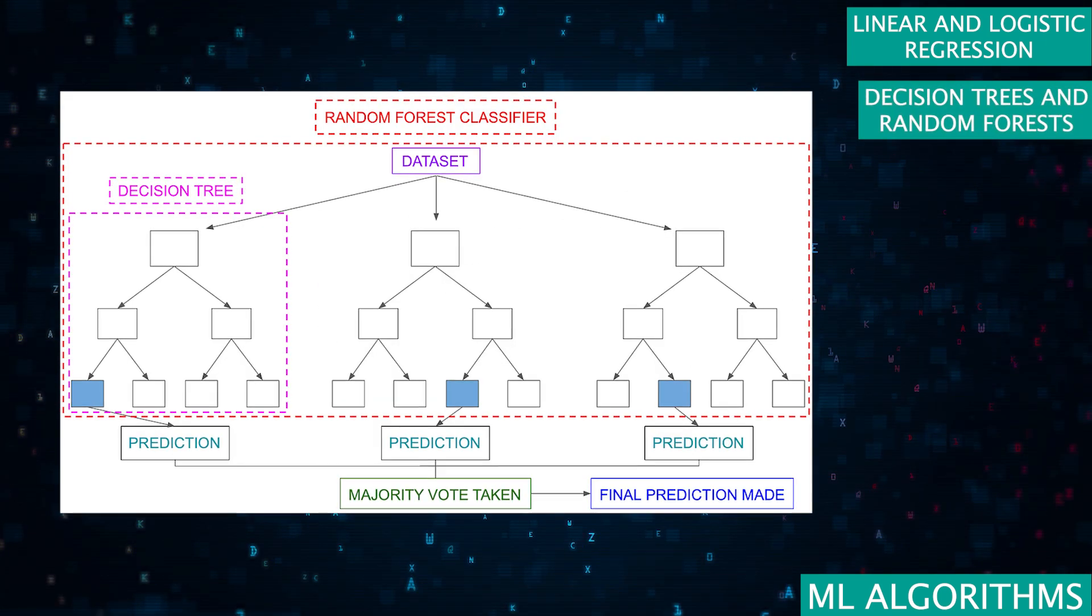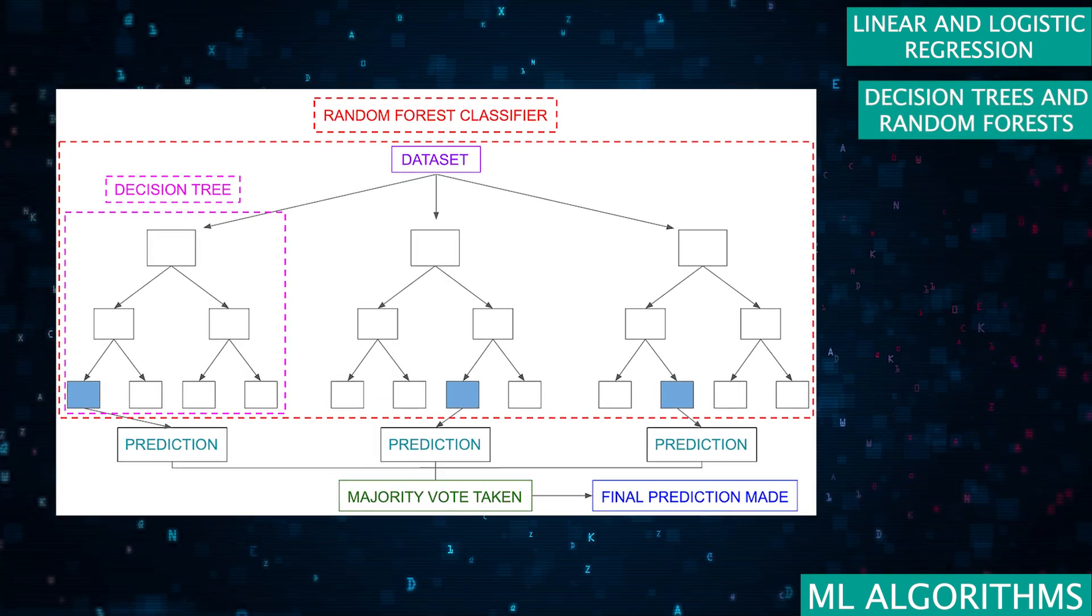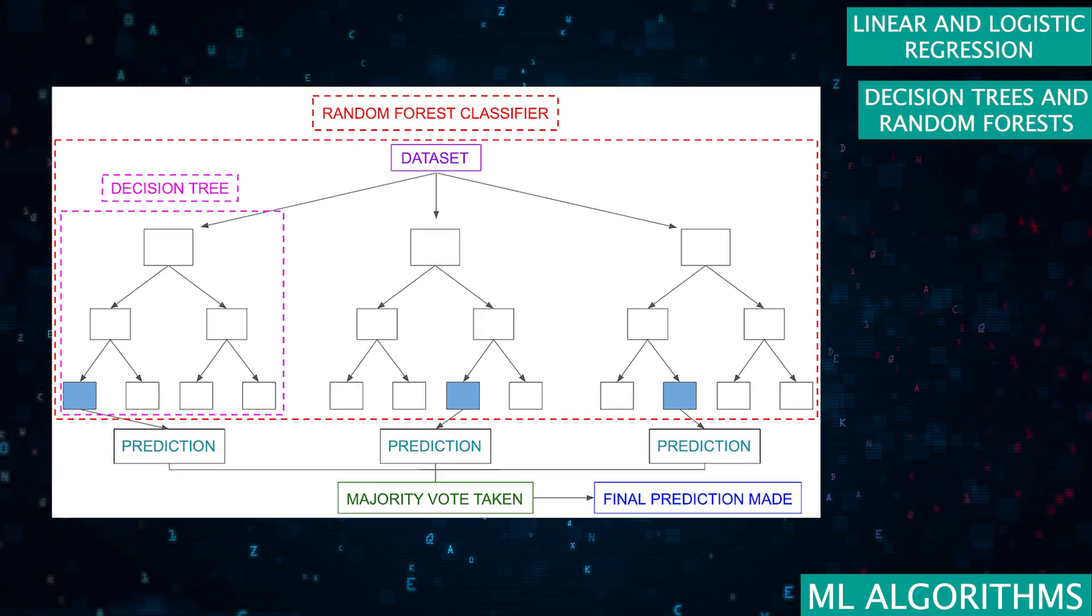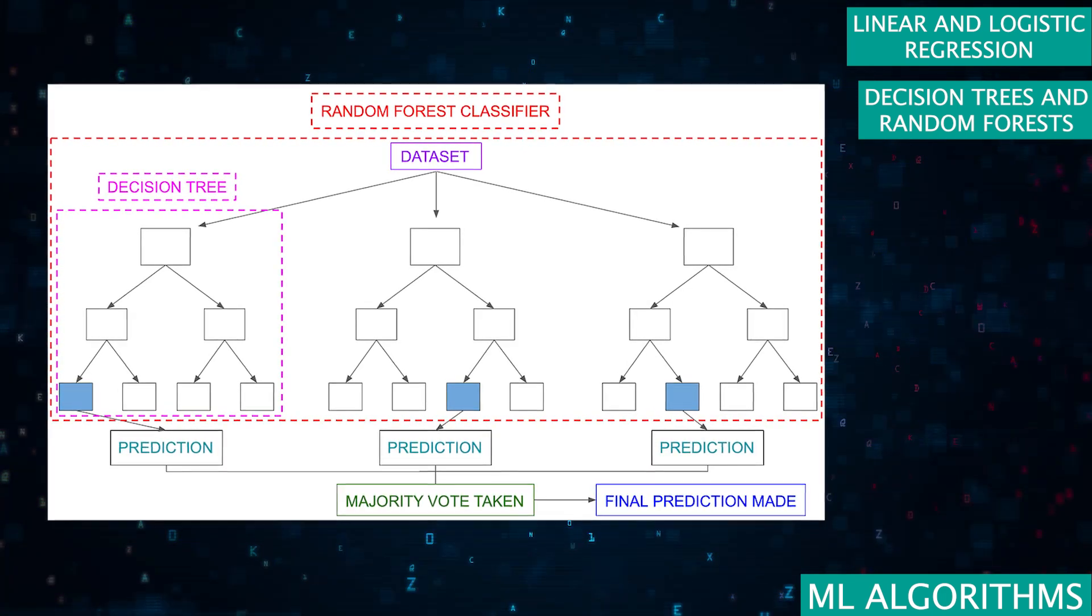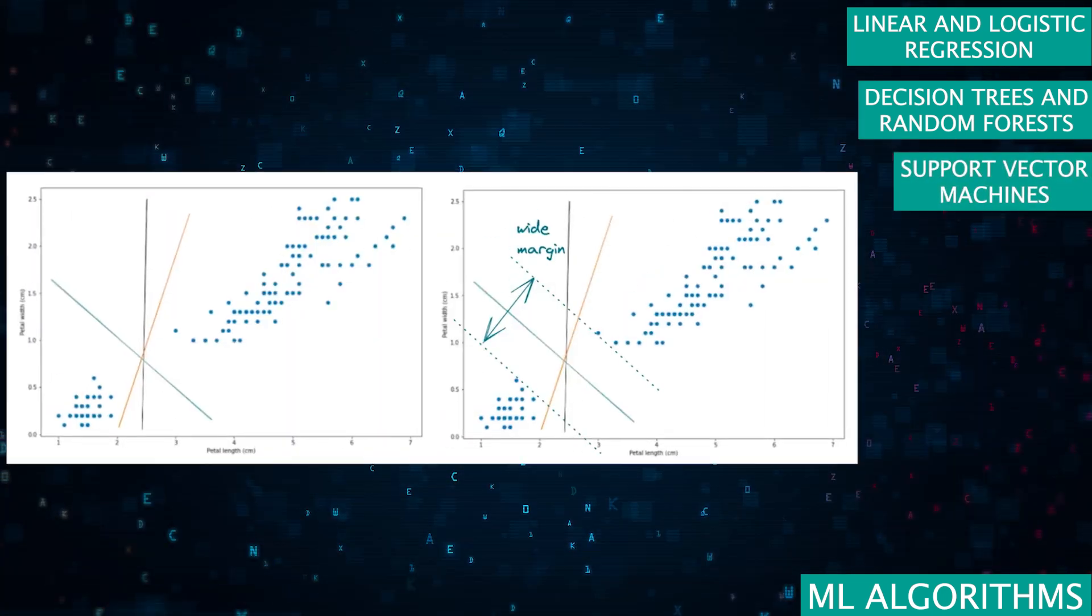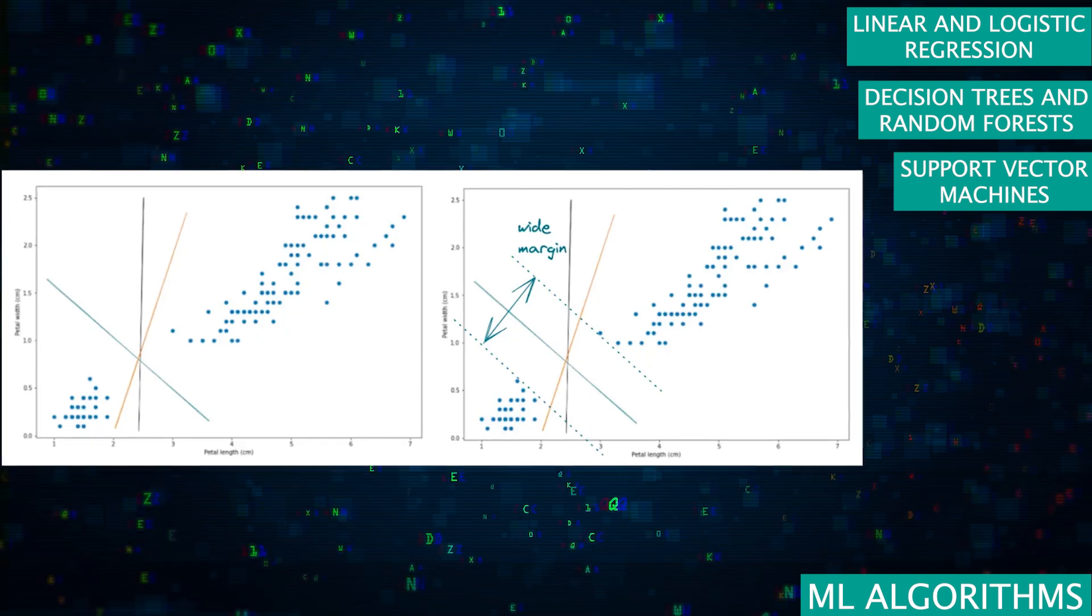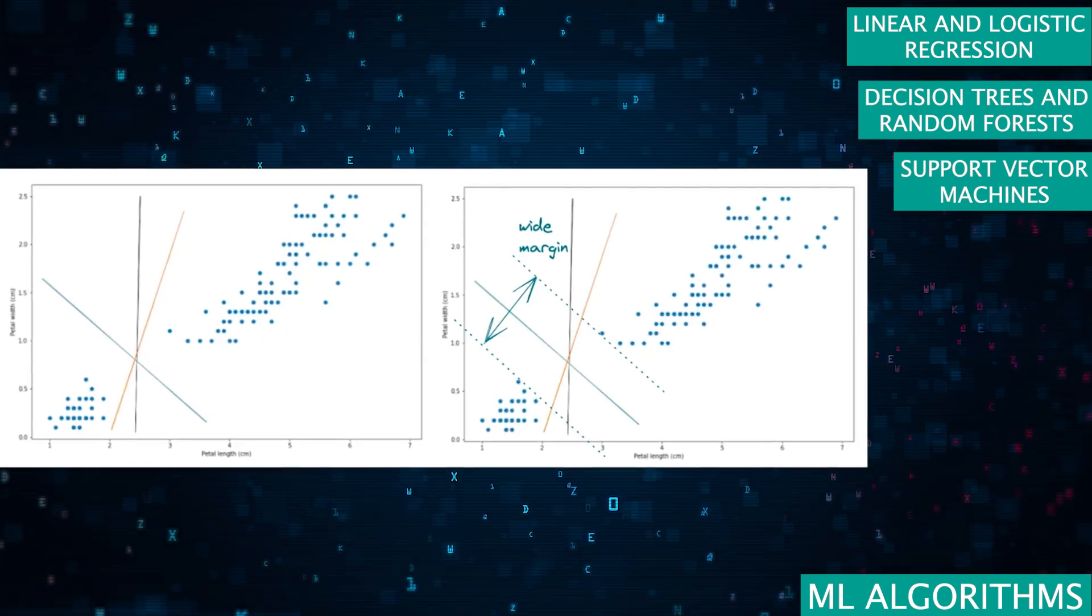Decision trees and random forests, powerful for both classification and regression tasks, they're intuitive yet effective. Support vector machines, ideal for high dimensional spaces, SVMs are great for classification challenges.